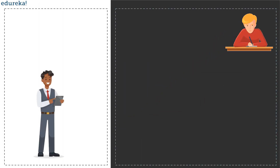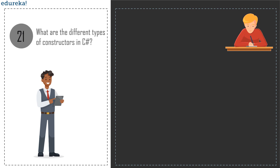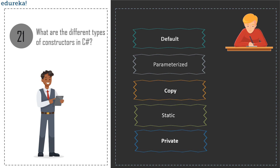Question 21: what are the different types of constructors in C#? The types are: default constructor, parameterized constructor, copy constructor, static constructor, and private constructor. A default constructor has no parameters and initializes all numeric fields to 0 and all string and object fields to null. A parameterized constructor has at least one parameter and can initialize each instance to different values. A copy constructor creates an object by copying variables from another object, used to initialize a new instance to the values of an existing instance.